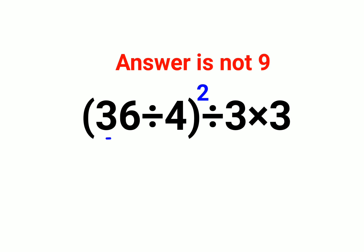Now let's look at the question. The question is (36÷4)², everything under a bracket, divided by 3×3. So first let's do the bracket, because according to BODMAS and PEMDAS, the bracket has to be done first. So 36÷4 gets you 9², divided by 3×3.